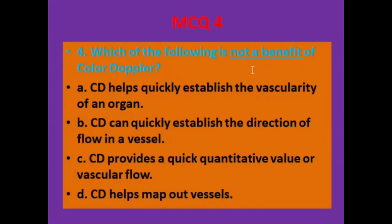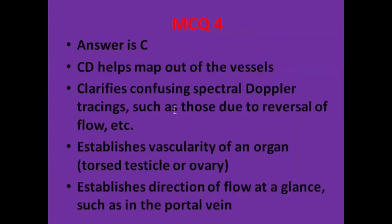MCQ number four: which of the following is NOT a benefit of color Doppler? A: color Doppler helps quickly establish the vascularity of an organ. B: color Doppler can quickly establish the direction of flow in a vessel. C: color Doppler provides a quick quantitative value of vascular flow. D: color Doppler helps map out vessels. The answer is C.